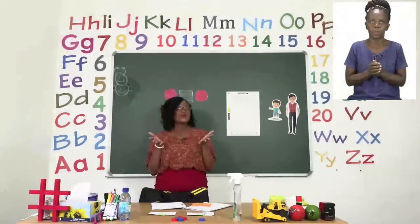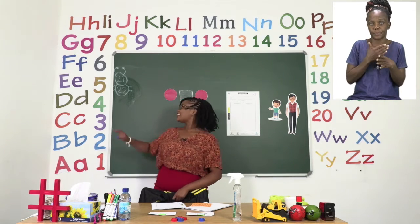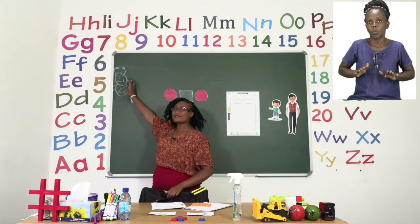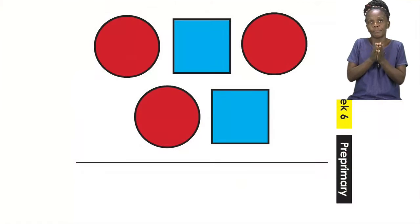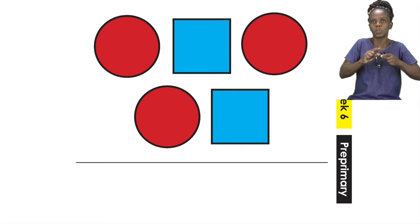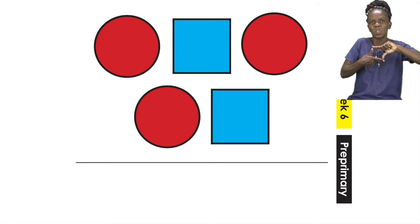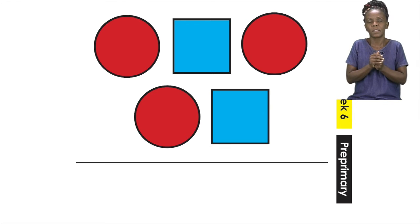For our first fun activity today, boys and girls, let's turn to page 21. On page 21, we have some shapes. Now we are going to repeat the pattern of those shapes. But what shapes are we actually doing? Let us take a look.